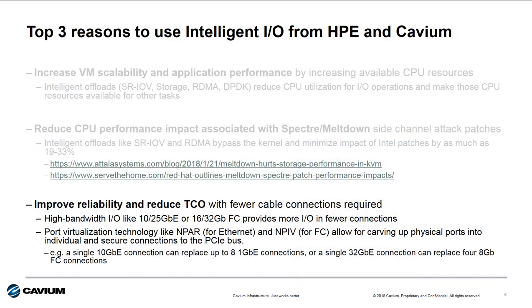Finally, higher bandwidth and the ability to virtualize physical ports with NPAR and NPIV technologies allow customers to reduce the number of physical connections required to connect servers to networks or to storage devices. Fewer connections means lower costs and fewer possibilities for cabling issues, errors, or failures.